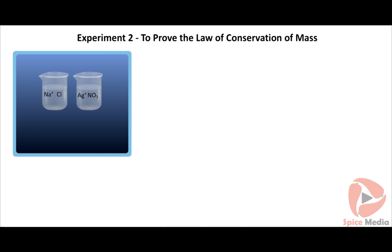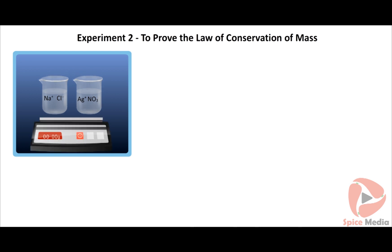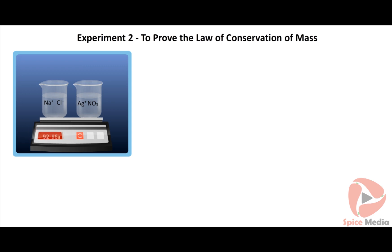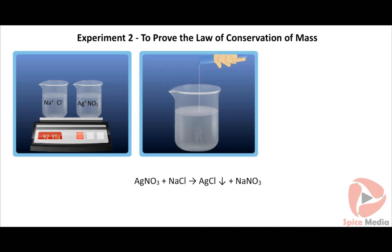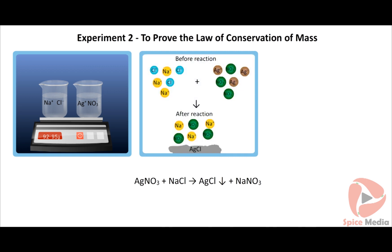Experiment two — to prove the law of conservation of mass. Take silver nitrate and sodium chloride solutions in separate beakers. Weigh the two beakers and note down the reading as the initial value. Now mix the silver nitrate solution with the sodium chloride slowly. A white precipitate of silver chloride is formed.